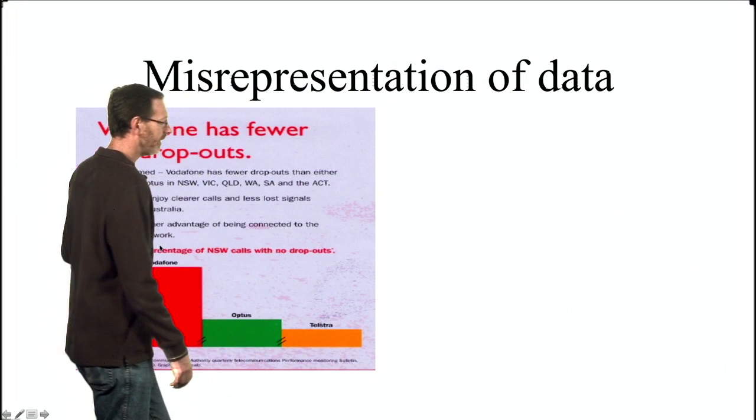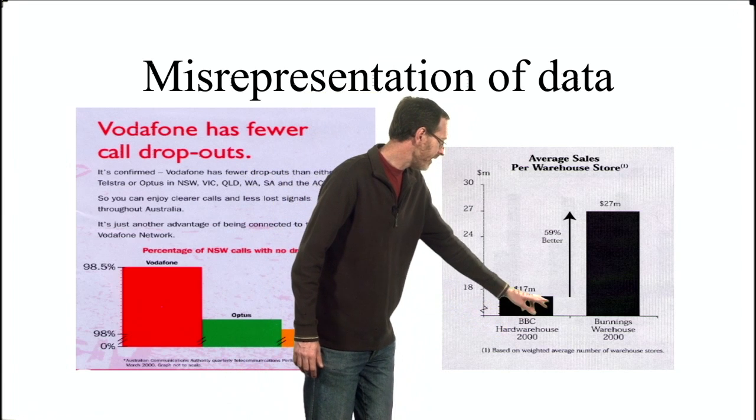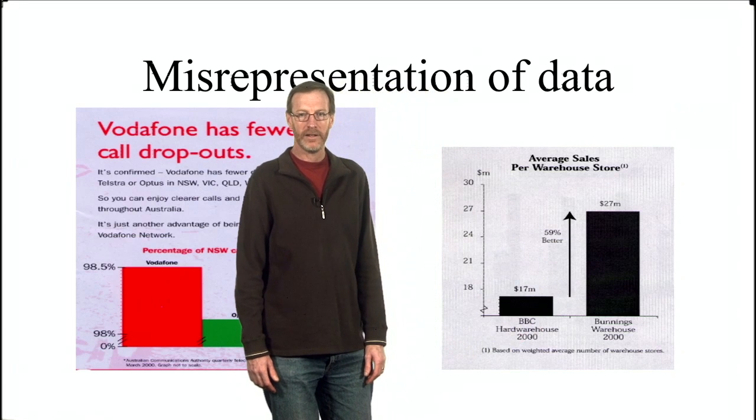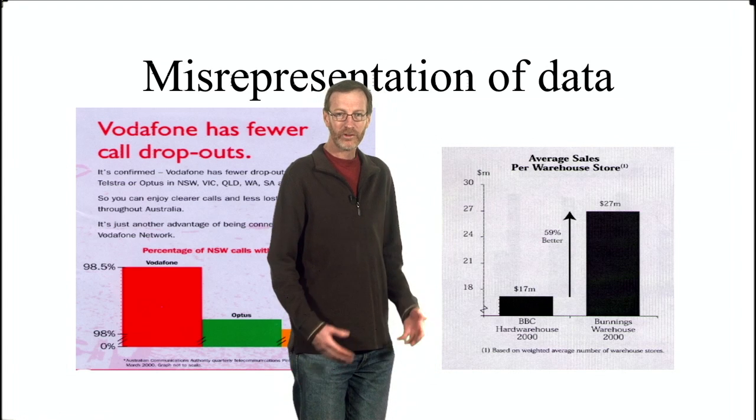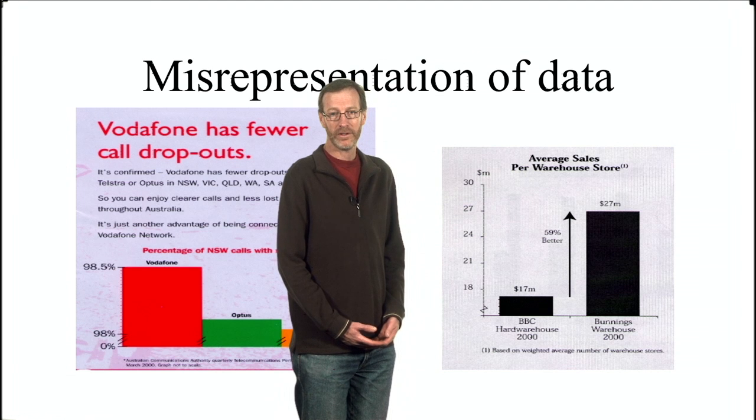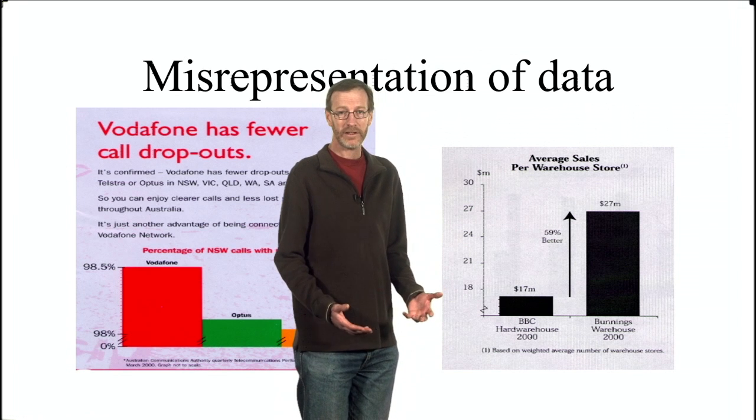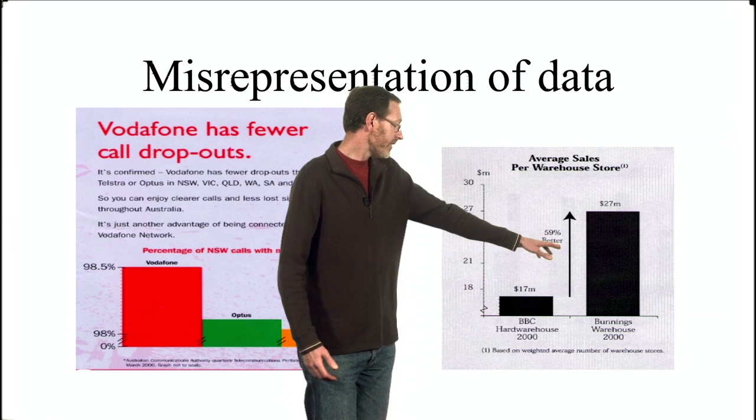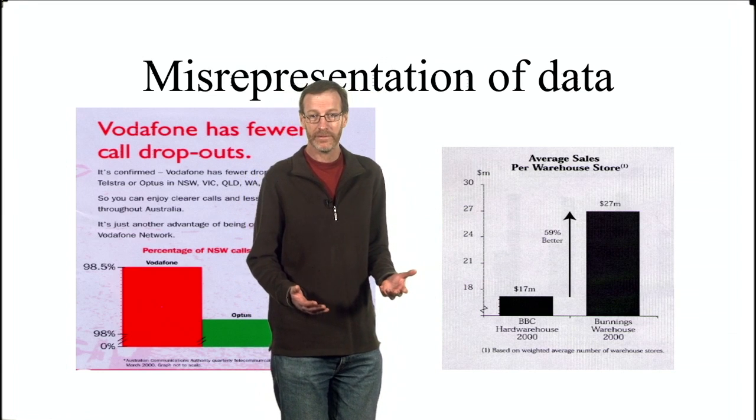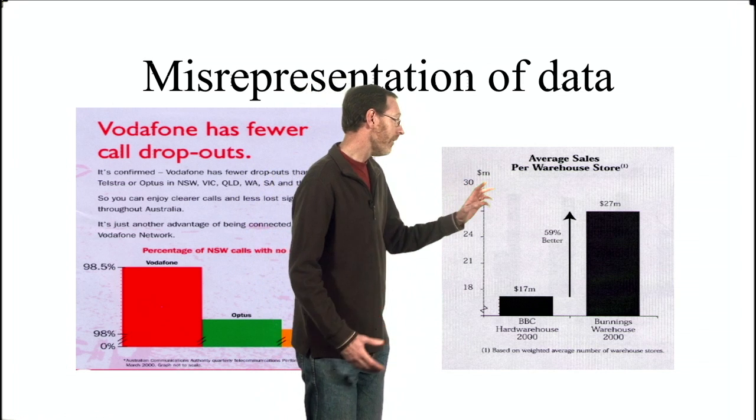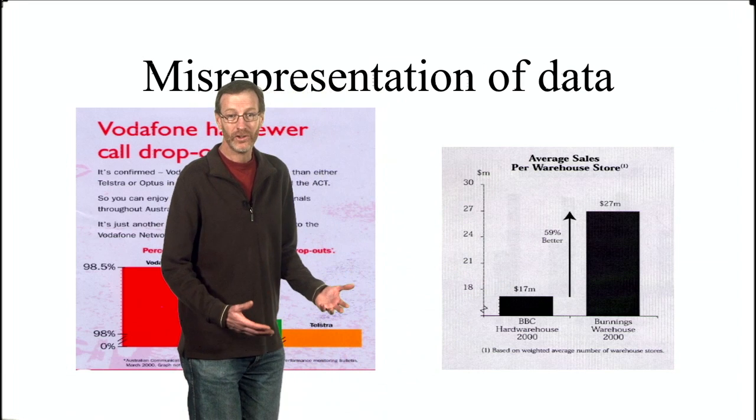Another example of a similar thing is the next graph. This one here again has two bars. This bar here represents 17 million. This one here represents 27 million. The bar on the right looks about six times bigger than the bar on the left. But the true ratio is 27 to 17, which is about 3 to 2. They're very different numbers. Again, no lies are told to you. The numbers are very clearly written on the graph. And there's a big arrow that says that the rightmost bar is 59% better than the leftmost bar. So, you're not being lied to, but your eyes tell you otherwise. Your eyes say, wow, the bar on the left is six times bigger than the bar on the right. And that's a major difference that might drive you to choose that company over the other.